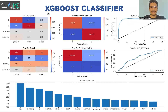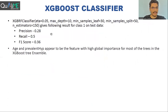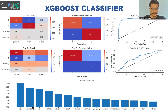After random forest, we experimented with the XGBoost classifier. On the train set we got decent results, while on the test set for class one, the precision was 0.28, recall was 0.5, and F1 score was 0.36. The most important features were age and prevalent hypertension — age was the most influencing feature for almost all the algorithms tested.